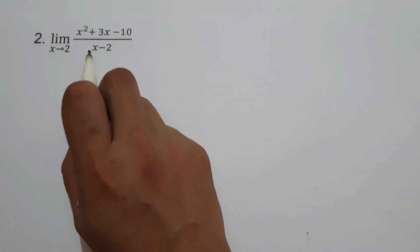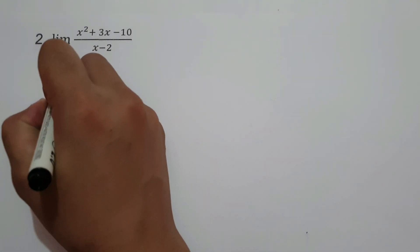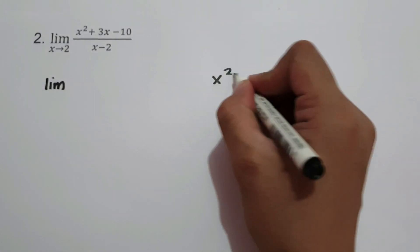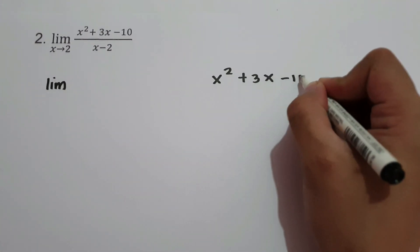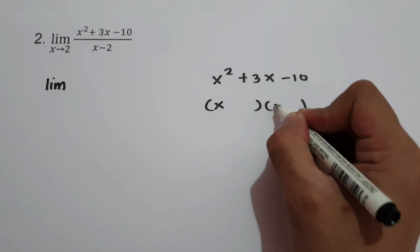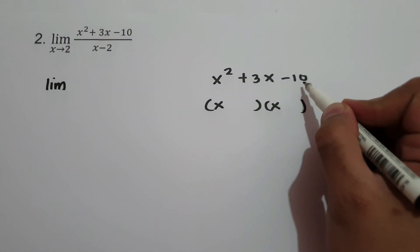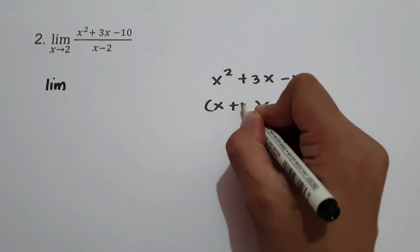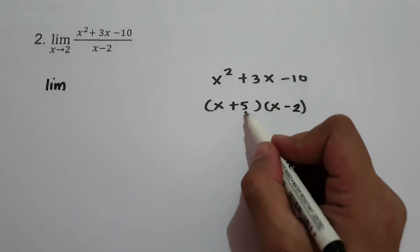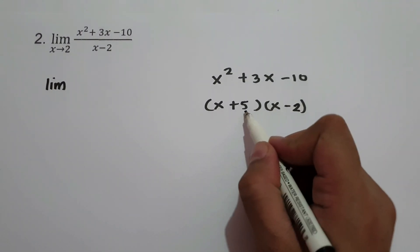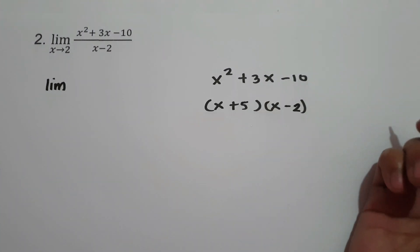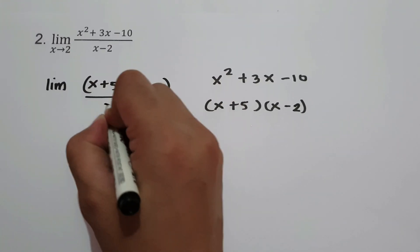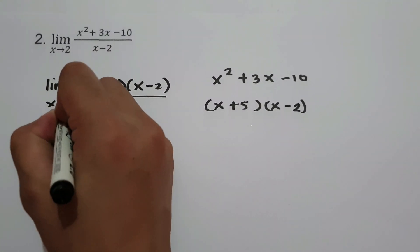So let us find the factors of x squared plus 3x minus 10. The factors of x squared are x and x. For the factors of negative 10: we need two numbers that multiply to negative 10 and add to positive 3. That is positive 5 and negative 2, since 5 times negative 2 is negative 10 and 5 minus 2 is 3.